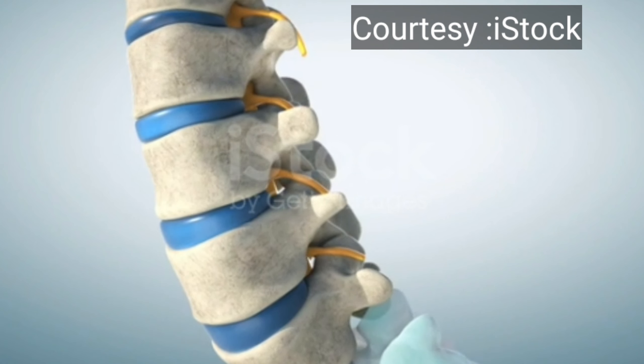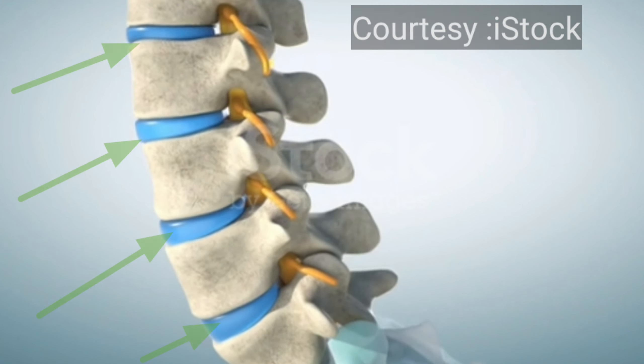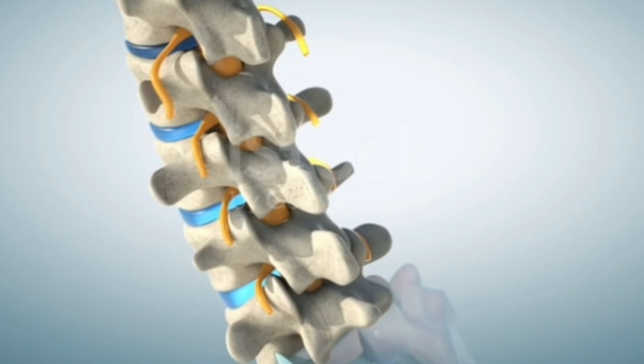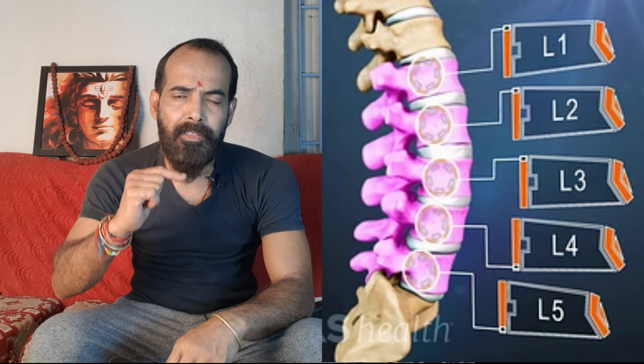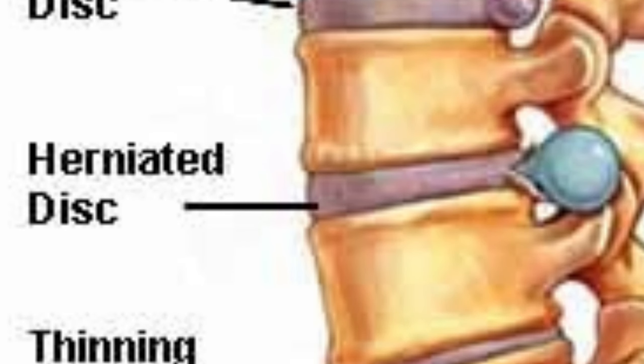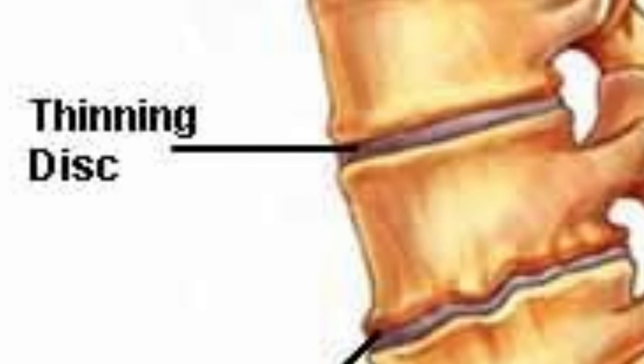Lumbar spondylitis is a condition caused by degeneration of the lumbar discs — the rubbery discs between the spinal bones. As you can see in this picture, L1 to L5 is the lumbar spine. In between these vertebrae there are five discs, which are called the lumbar discs. If you are suffering from lumbar spondylitis, the problem is in your lumbar discs. Remember: this lumbar region is very, very sophisticated.